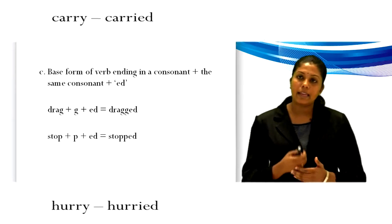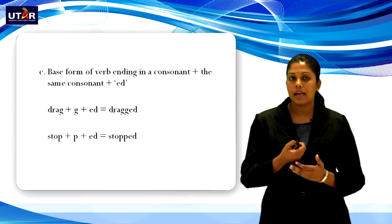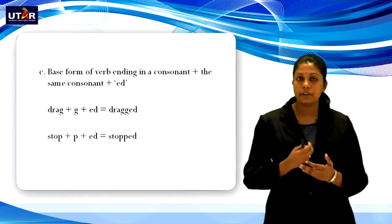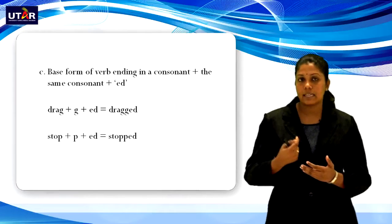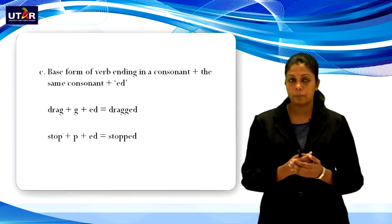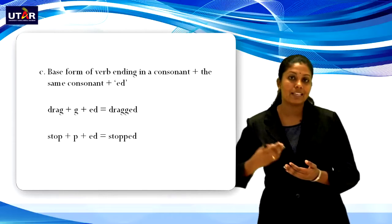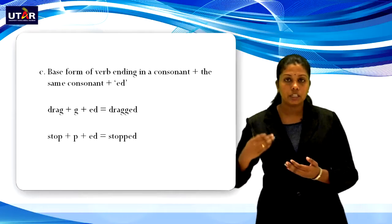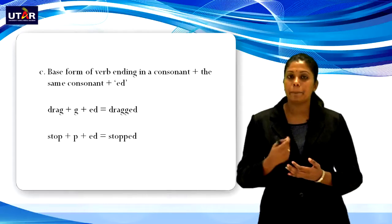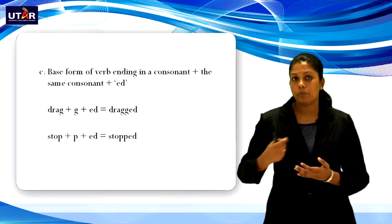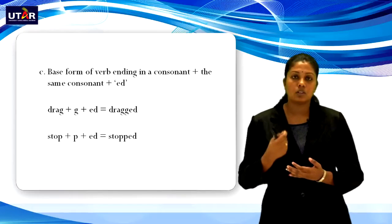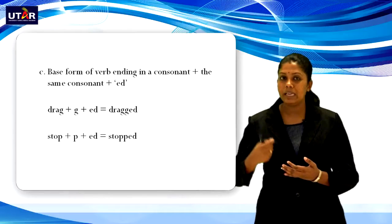For verbs ending in a consonant, you double the consonant and add -ed to it. For example, drag — D-R-A-G — ends with the letter g, which is a consonant. Double the g and add -ed, so drag becomes dragged — D-R-A-G-G-E-D. Another example is stop — S-T-O-P — ends with p, a consonant. Double the p and add -ed, so it becomes stopped — S-T-O-P-P-E-D.